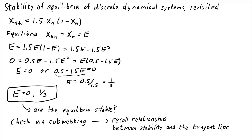Remember that an equilibrium is stable if you start nearby and it stays nearby or even gets closer. An equilibrium is unstable if, no matter how close you start to it, it still moves away.